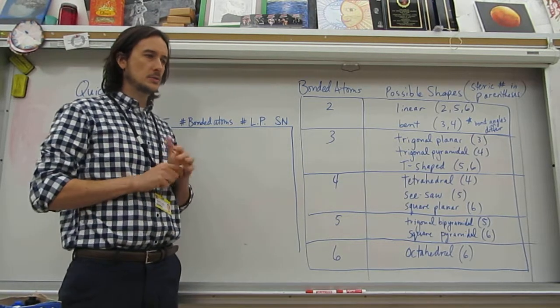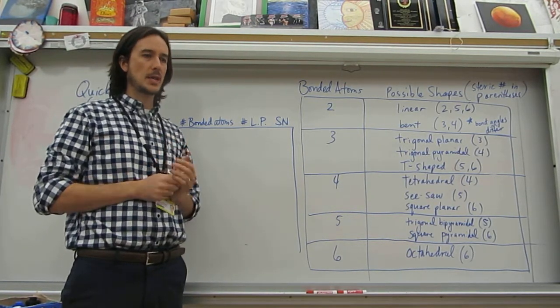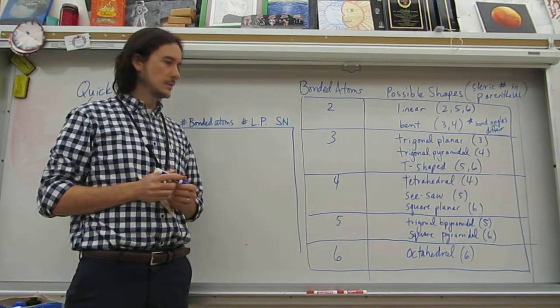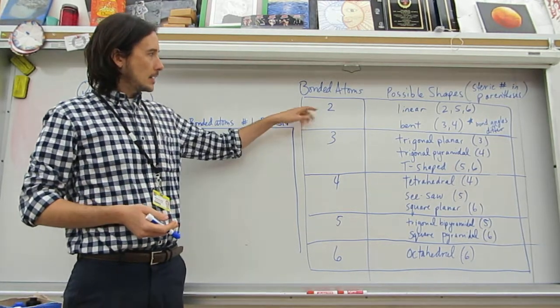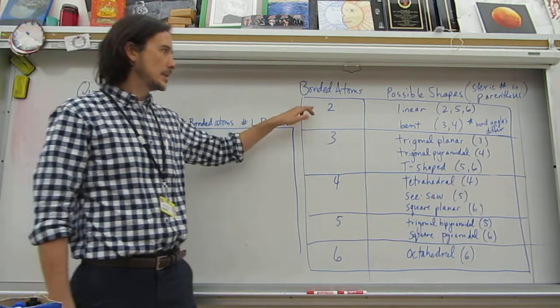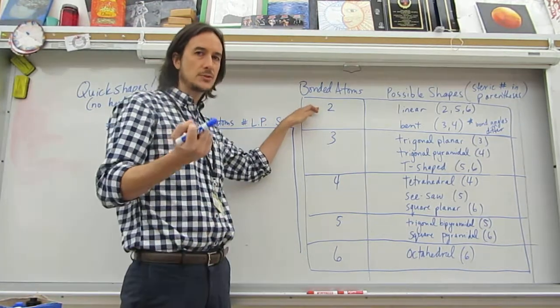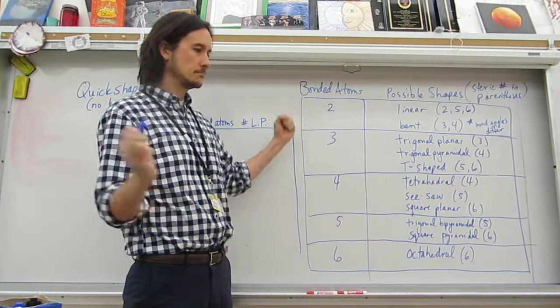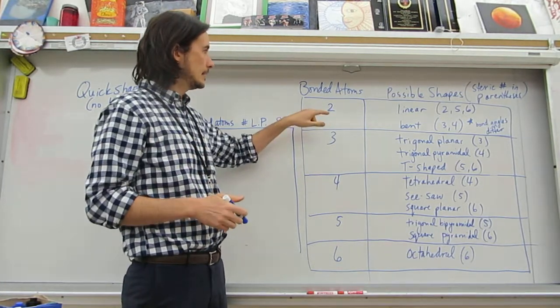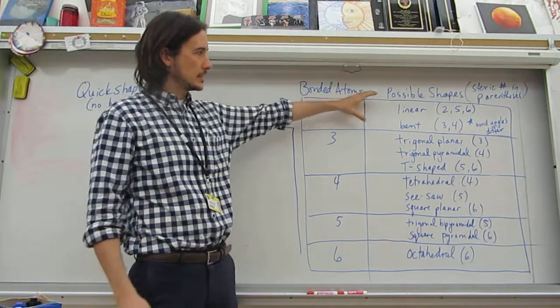All right, so if you're going to try and find the shape of a molecule really quickly, there's some things that can speed it up. I made a little chart here for number of bonded atoms, so you'd have a center atom plus a certain number stuck to it. So this would be two atoms stuck to something. And here's the possible shapes.